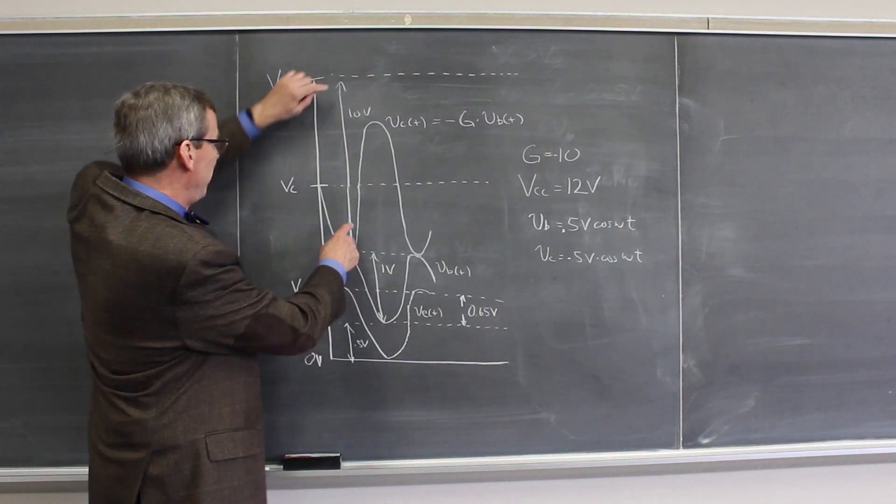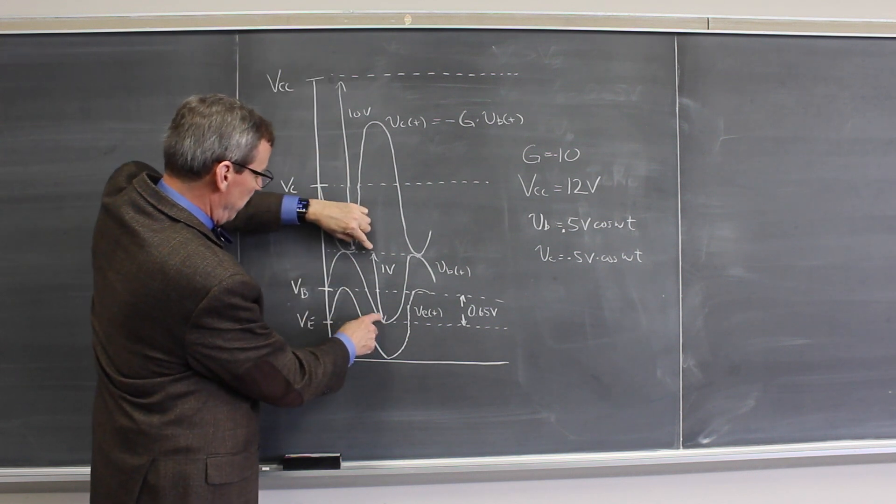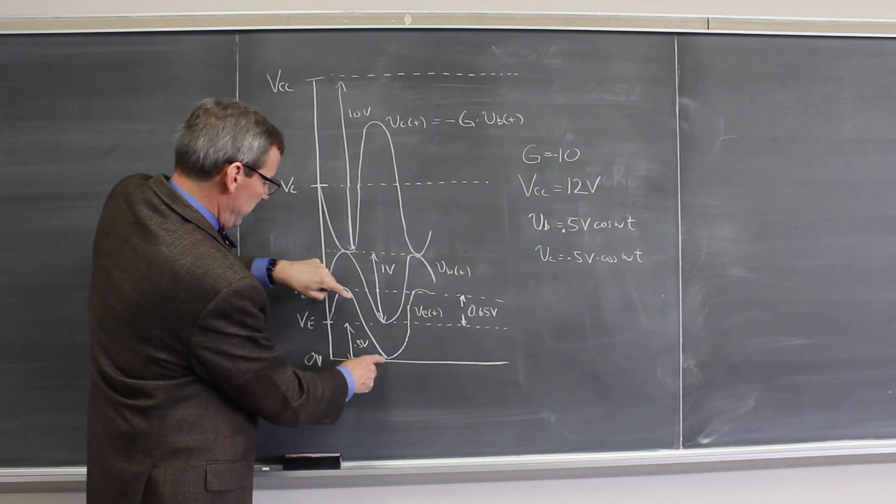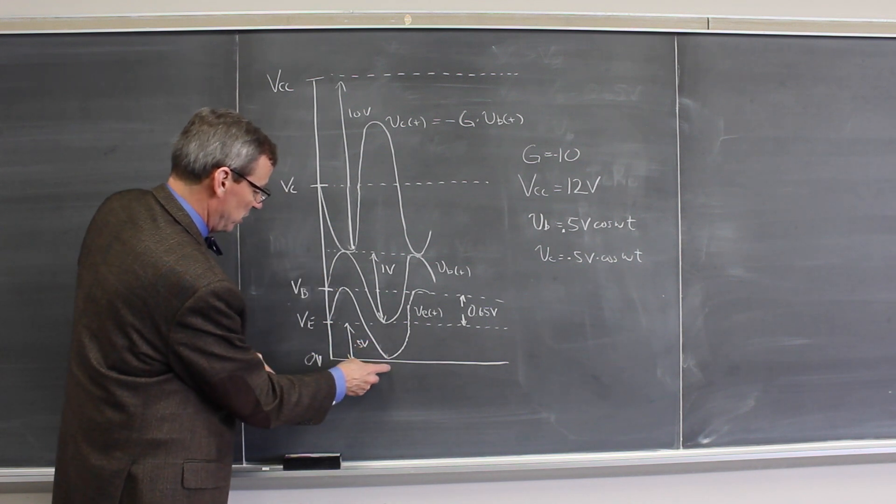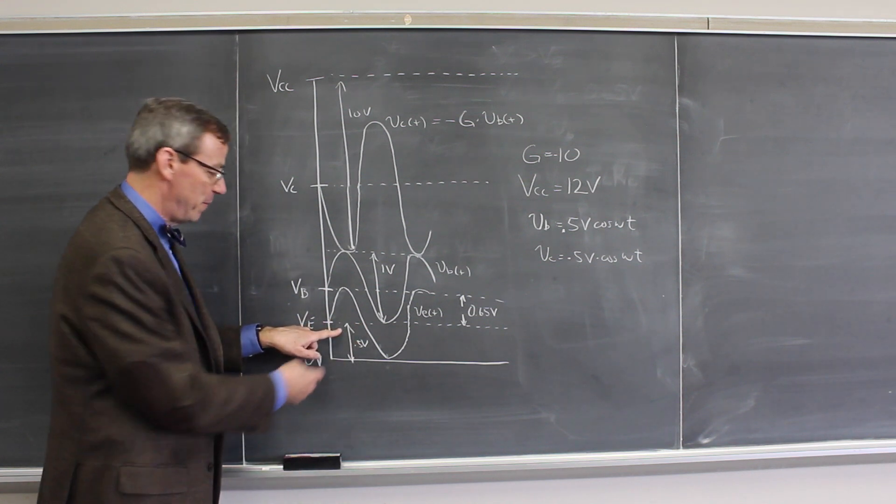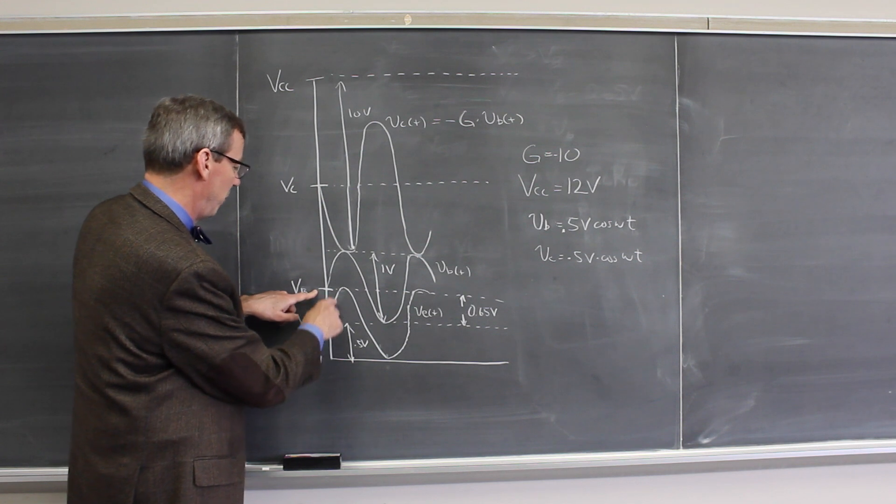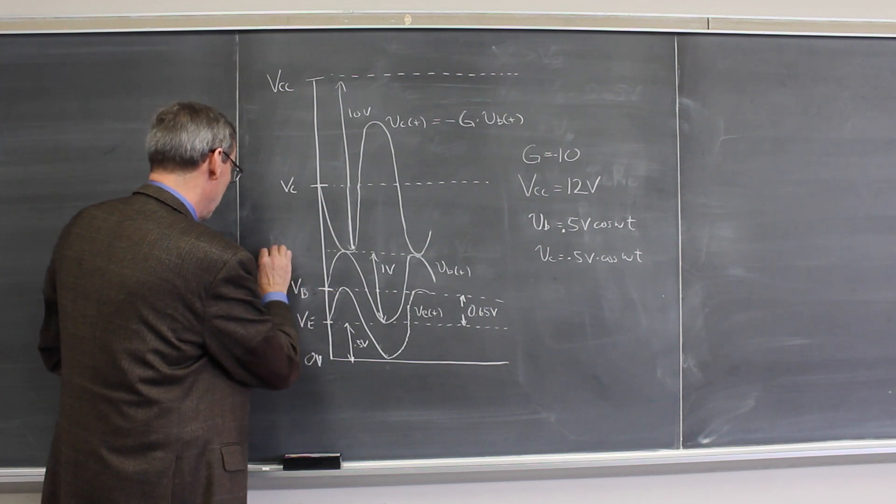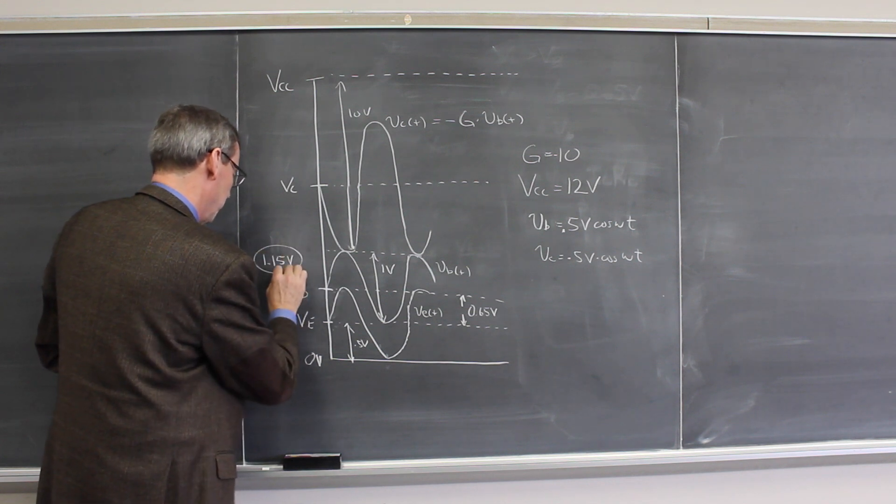So we have to have 10 volts for the AC signal here, a volt for the input, and there's a volt here for the emitter. And it has to make sure this doesn't go below zero, so that means the emitter voltage has to be at least a half a volt above ground. So the lowest we could push the base voltage is a half a volt plus 0.65 volts, or 1.15 volts for the base voltage.